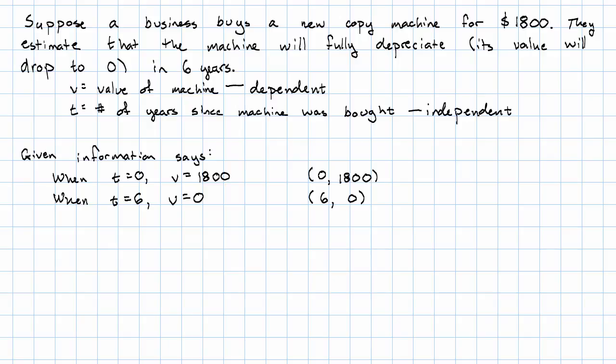We can write down this equation in that form that we get from the intercepts. So a times my independent variable plus b times my dependent variable equals those two numbers multiplied together.